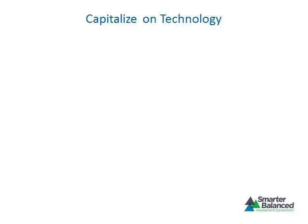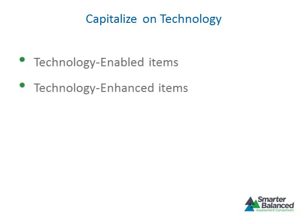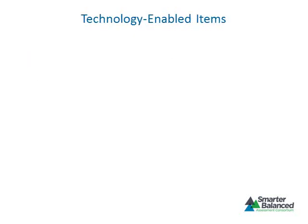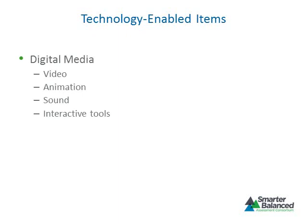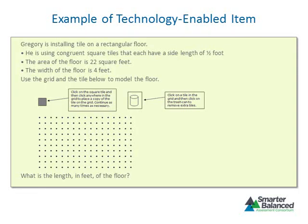In addition to traditional selected and constructed response items, Smarter Balanced aims to capitalize on technology to improve the measurement of student learning. The consortium aims to develop two types of technology-based items: technology-enabled and technology-enhanced. Technology-enabled items use media such as video, animations, sound, or interactive tools to stimulate an assessment target, but still require a student to provide either a selected response or a constructed response consisting of text and/or numbers. As an example, one item allows students to explore an interactive tool to manipulate tiles before entering an answer.